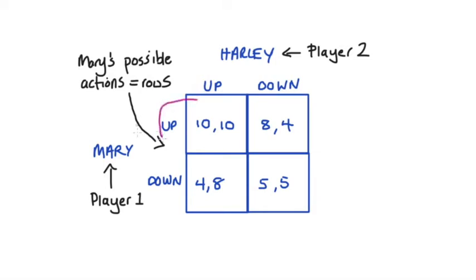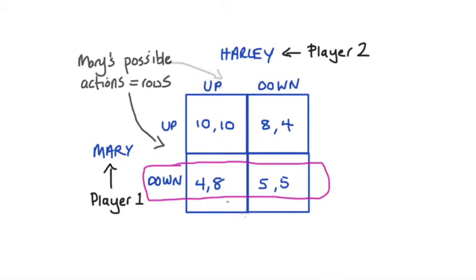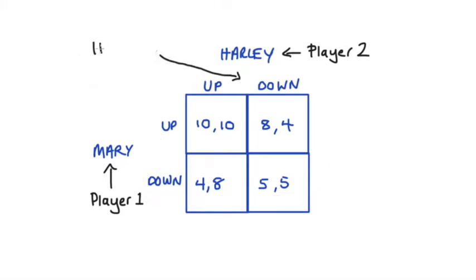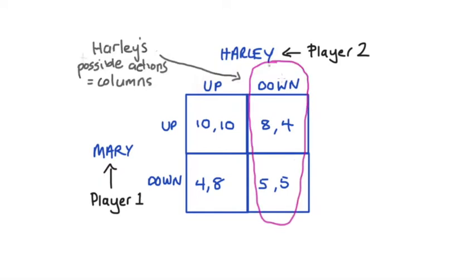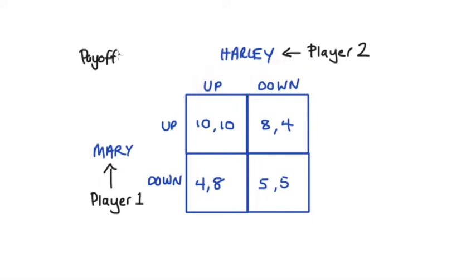In this game Mary can either go up or down. The number of columns corresponds to the number of actions that Harley, or player two, can undertake. In this game Harley can play up or down. The numbers in the cells in our table detail the payoffs that each player will get for each possible outcome of the game, with player one's payoff listed first and then player two's.